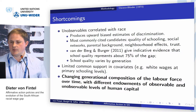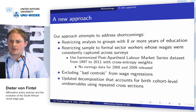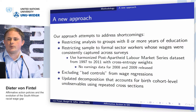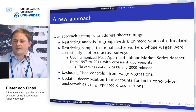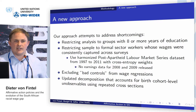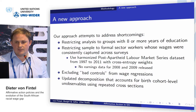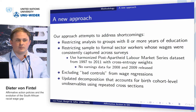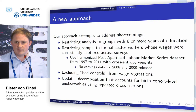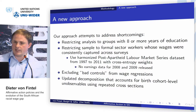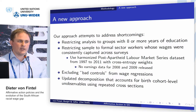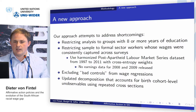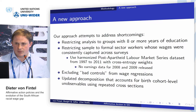Our approach attempts to address these shortcomings. Because of problems of common support, we limit ourselves to individuals who have eight years or more of education — this is because very few white individuals have primary school education or lower in South Africa. We also restrict our sample to formal sector workers, as we assume the laws implemented do not necessarily affect informal sector workers directly. We use the post-apartheid labour market series from 1997 to 2011, noting there was no earnings data formally published for 2008 to 2009, so there are some gaps in the time series.